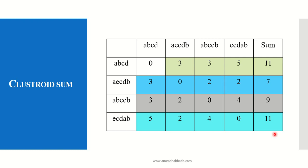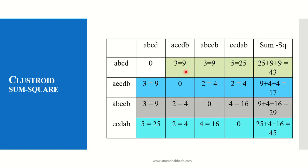The next step is to find the sum of squares of edit distances for each string. For ABCD: 3² + 3² + 5² = 9 + 9 + 25 = 43. For AECDB: 9 + 4 + 4 = 17. For ABECB: 9 + 4 + 16 = 29. For ECDAB: 25 + 4 + 16 = 45.